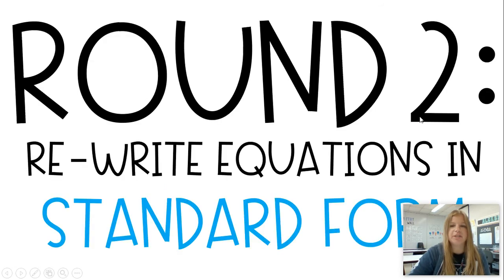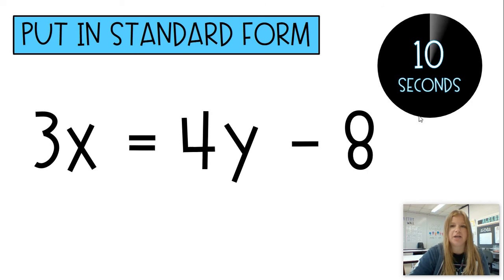Round 2. Rewrite the equations in standard form. Now you're going to have 10 seconds. Standard form looks like AX plus BY equals C. Ready? Go.